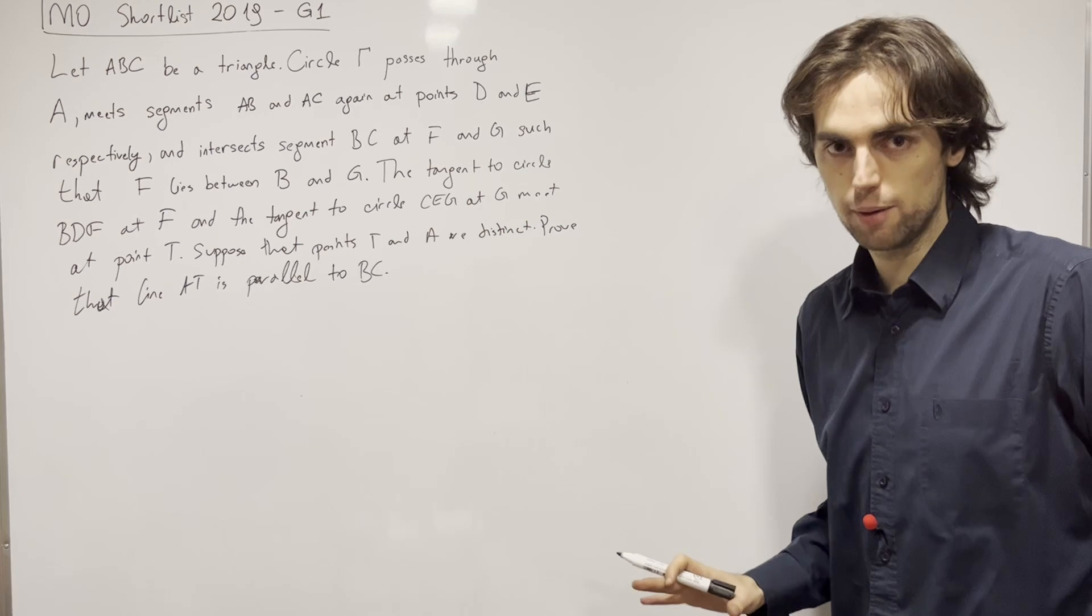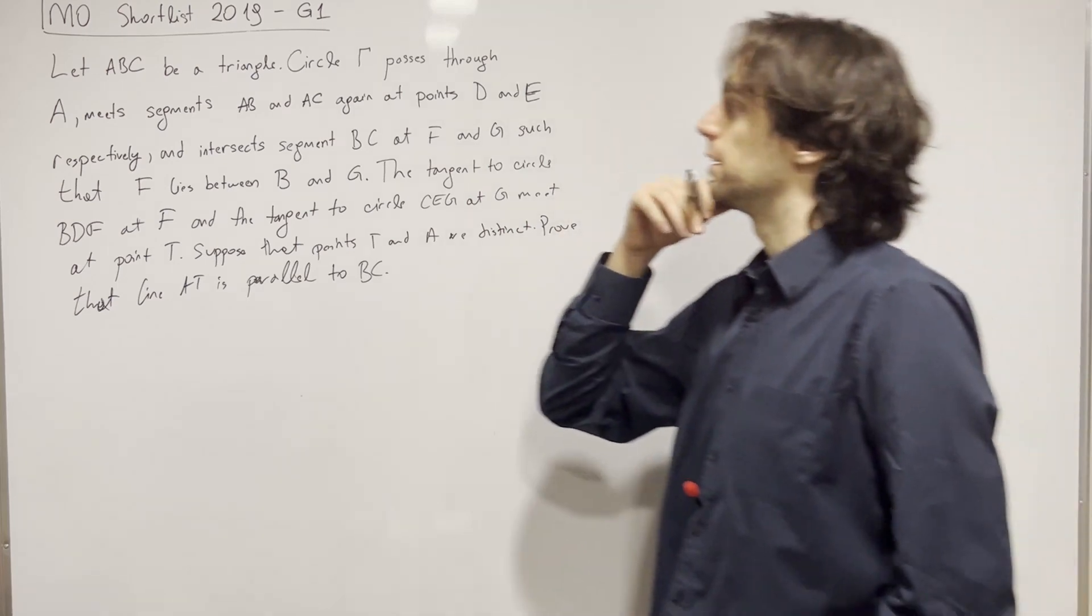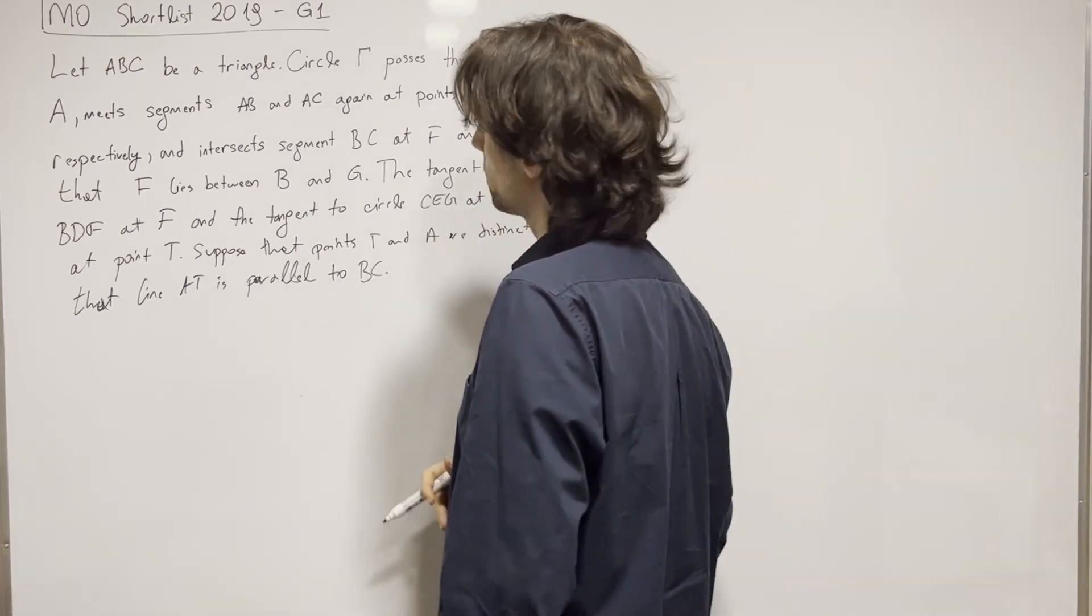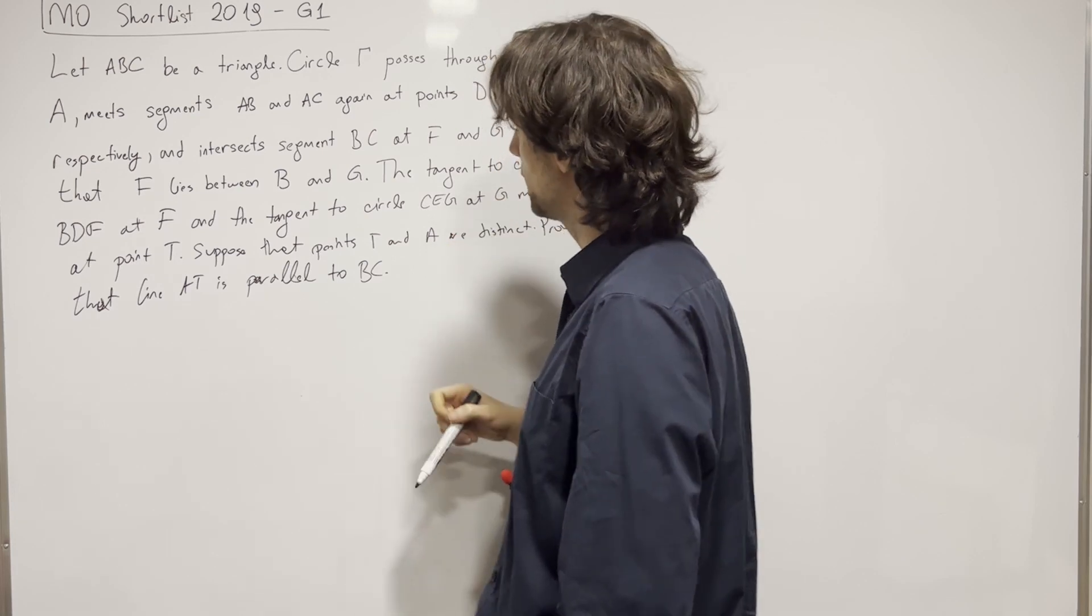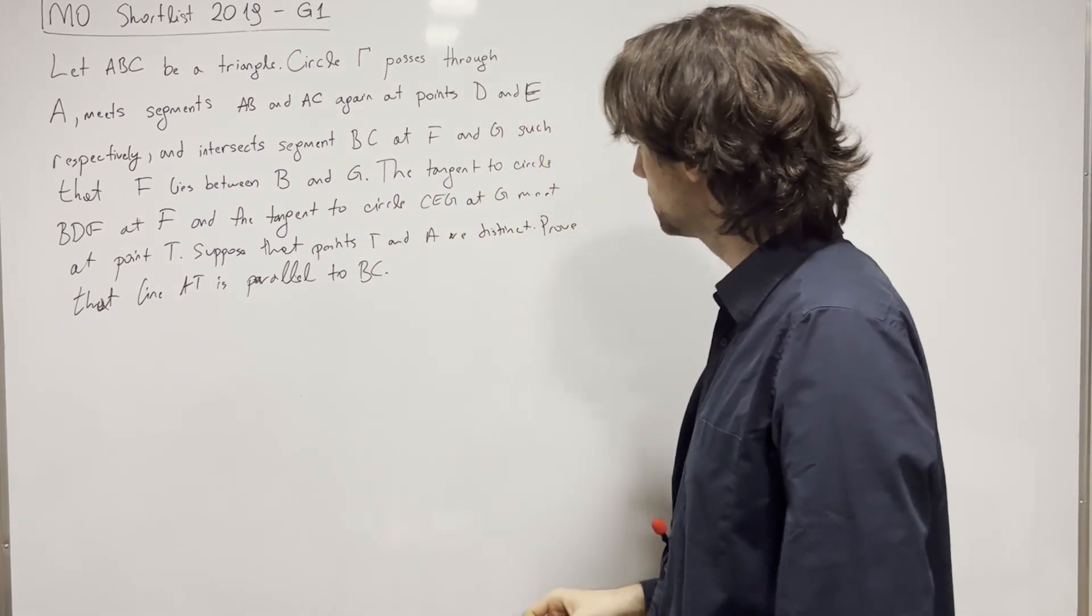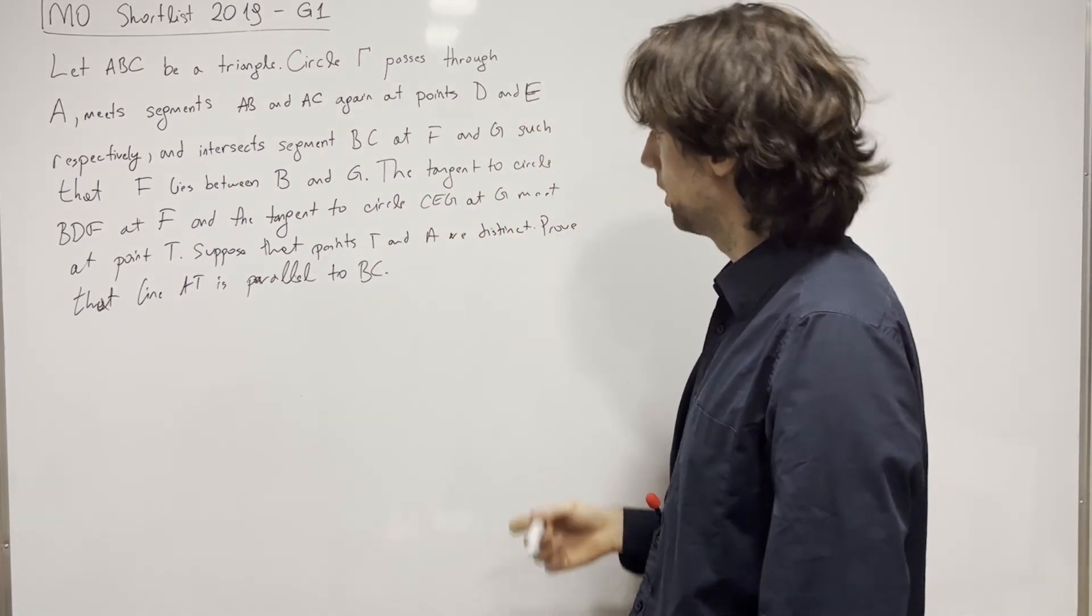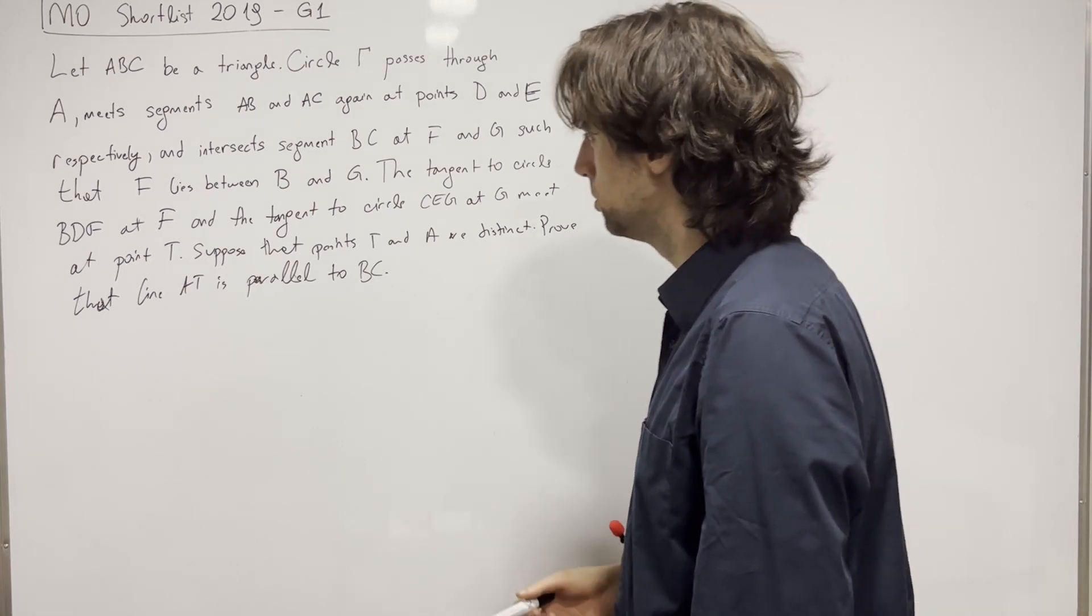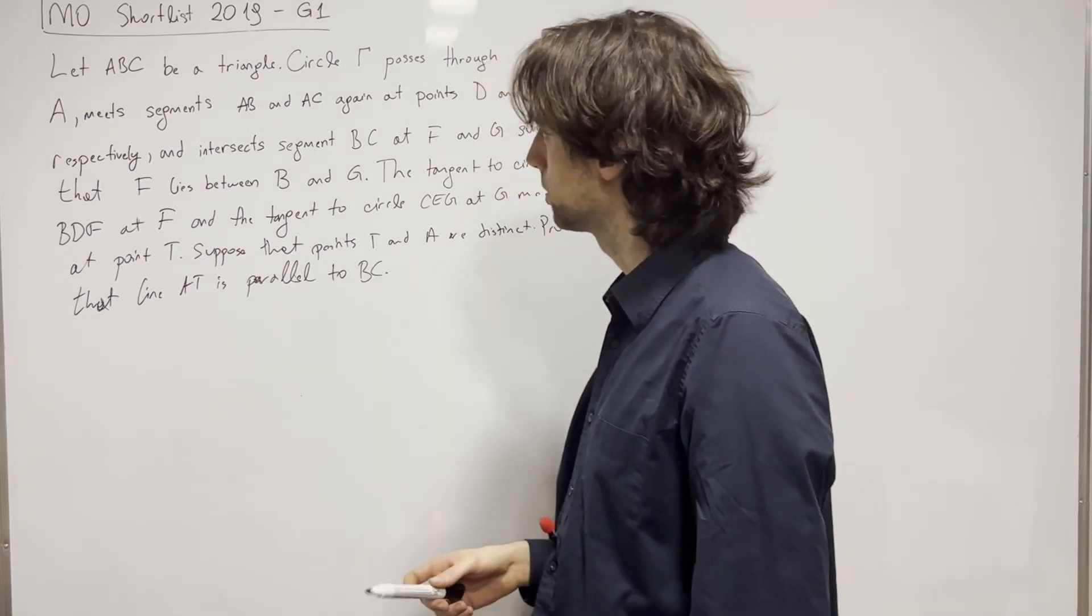So first, how do we draw a diagram? Well, let's read through the problem. We have a triangle ABC, a circle through A that intersects all of these segments, such that, okay, and then tangents to some other circles.